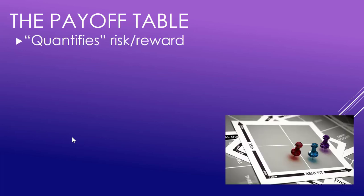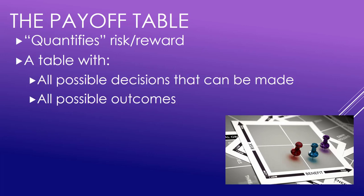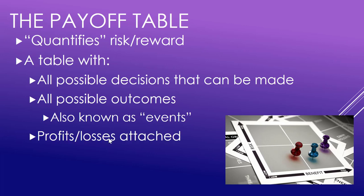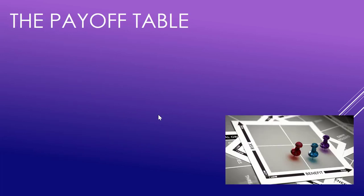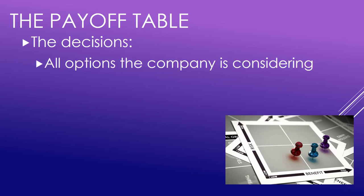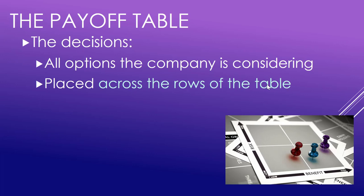The payoff table is a way to quantify our risk-reward. It's basically a table with all of our possible decisions, all of the possible outcomes that can stem from those decisions — also known as events — and all of the possible profits or losses related to those outcomes. The decisions are all the possible options a company can consider; for example, should we buy land in Vernon, in Lumby, both, one, or none?